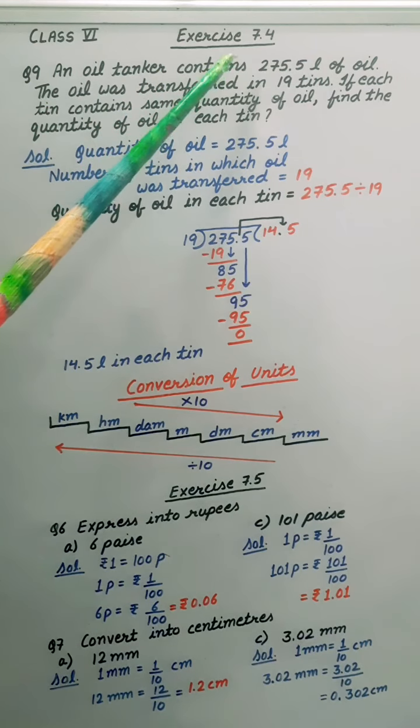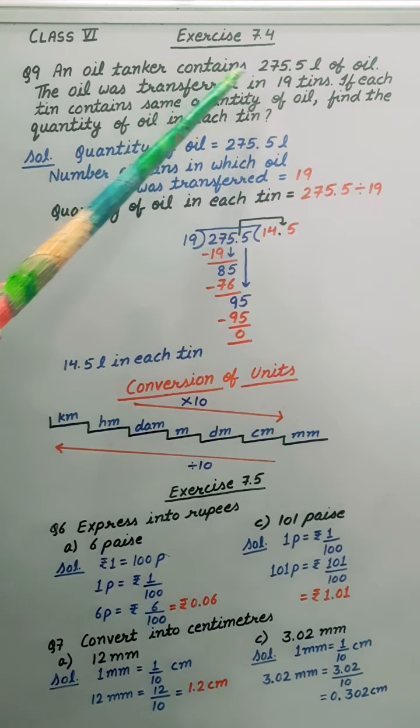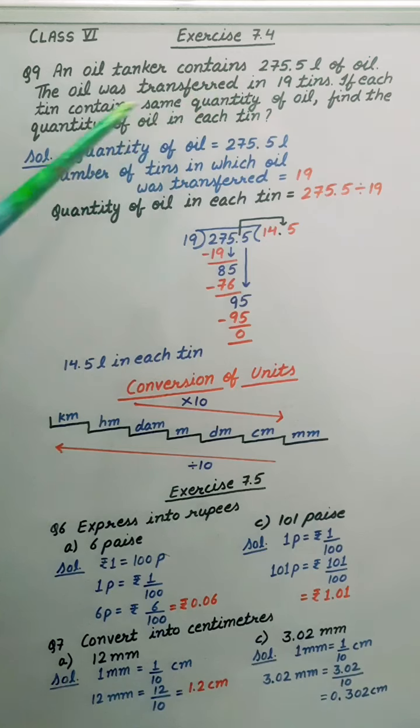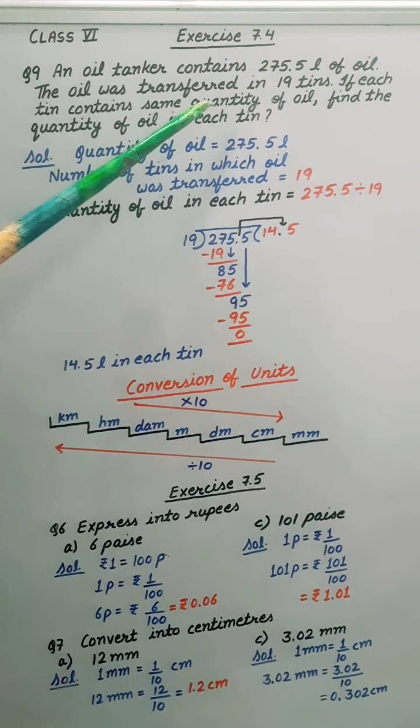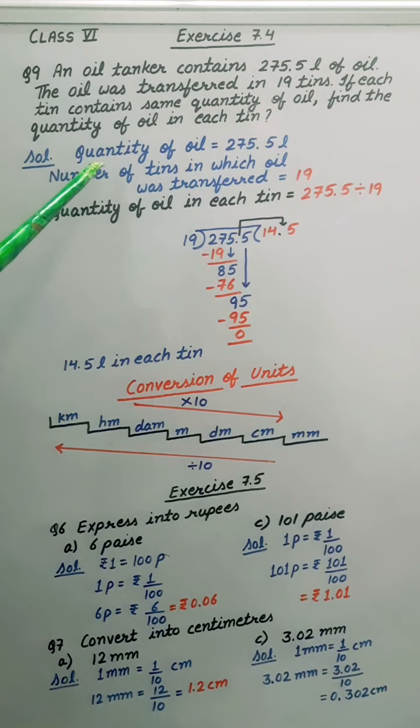An oil tanker contains 275.5 liter of oil. The oil was transferred in 19 tins. If each tin contains same quantity of oil, find the quantity of oil in each tin. Now let's begin solution here.